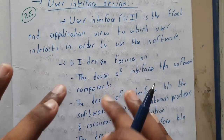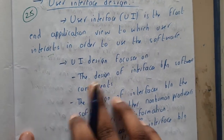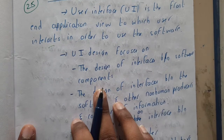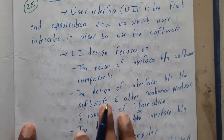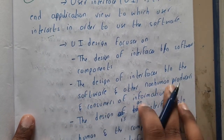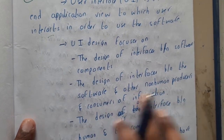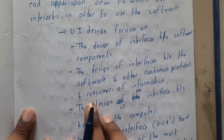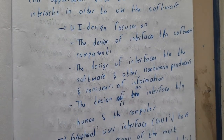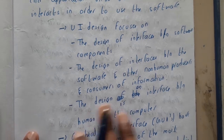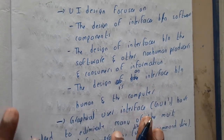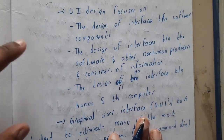Some basic focuses of UI design are: the design of interfaces between the software components should be proper; the design of the interface between the software and other non-human producers and consumers of information should also be maintained properly; and the design of the interface between the human and the computer.